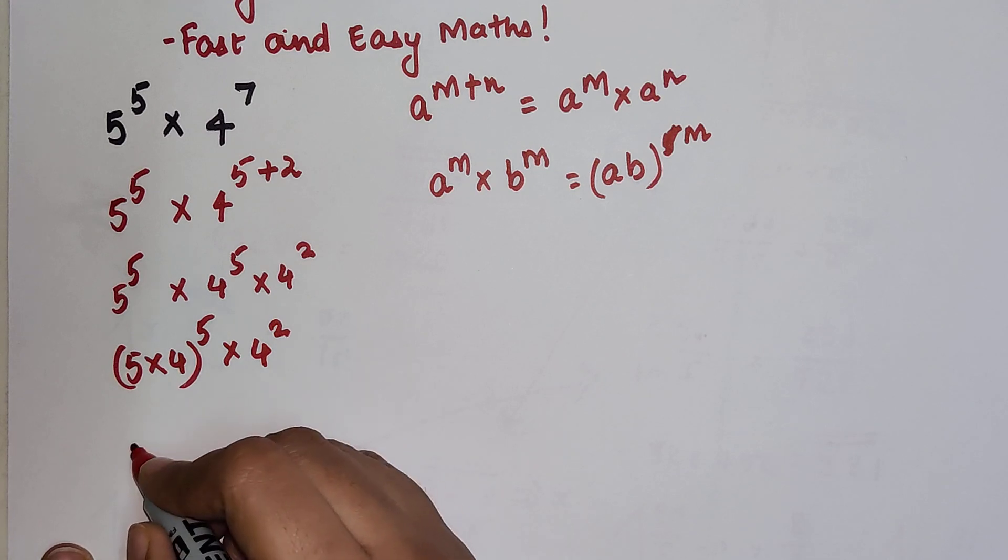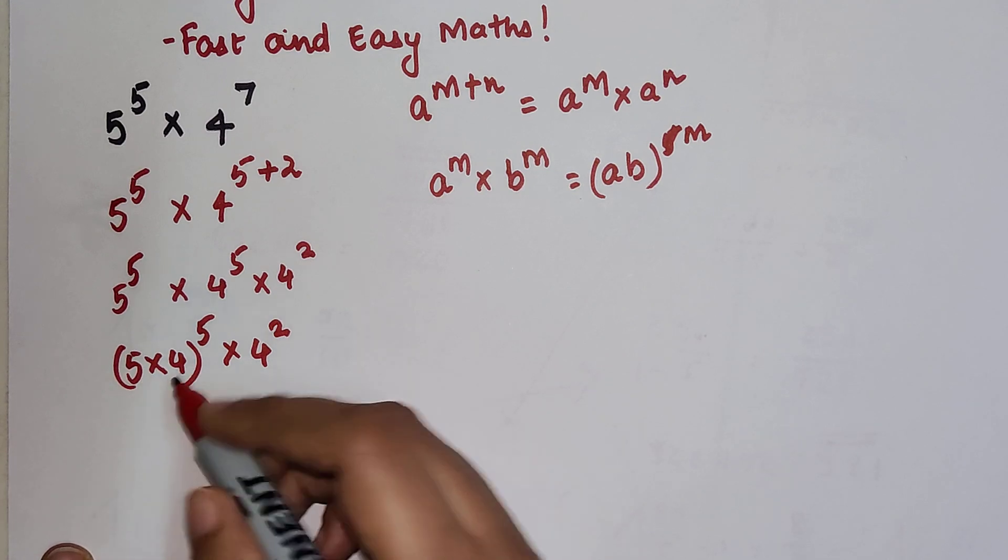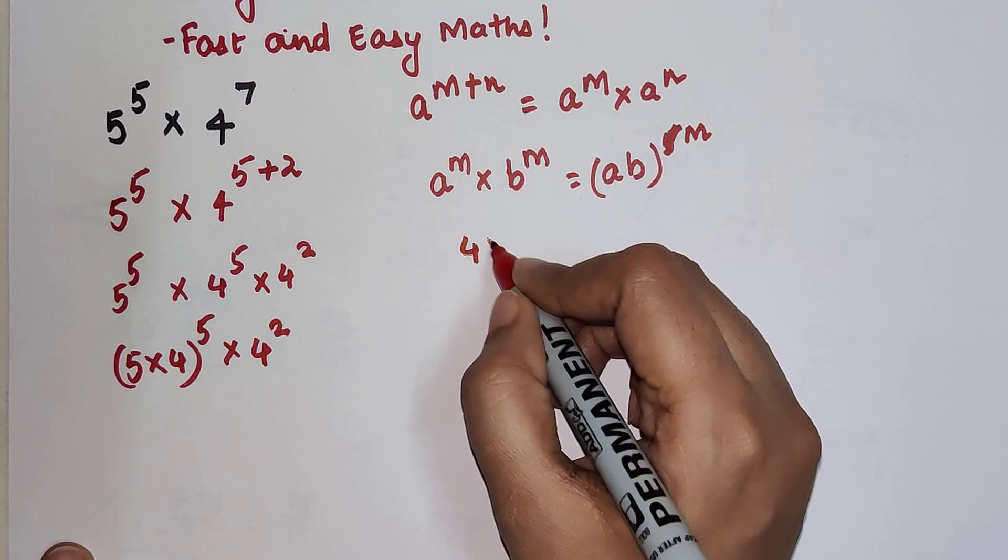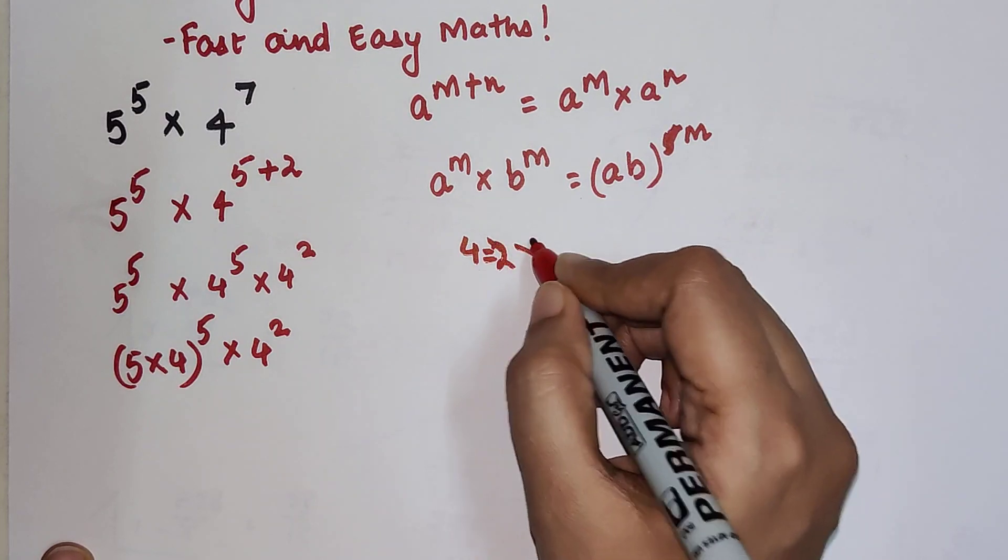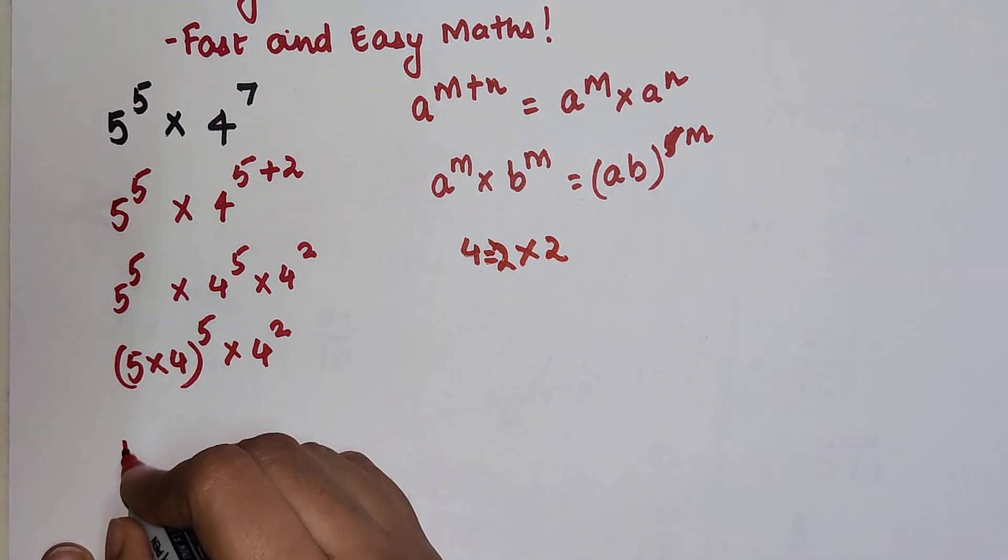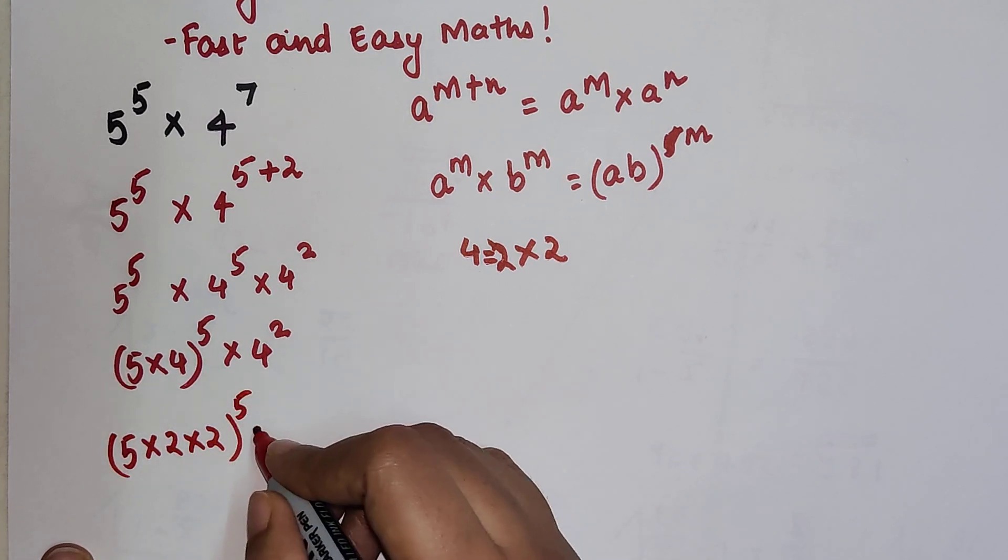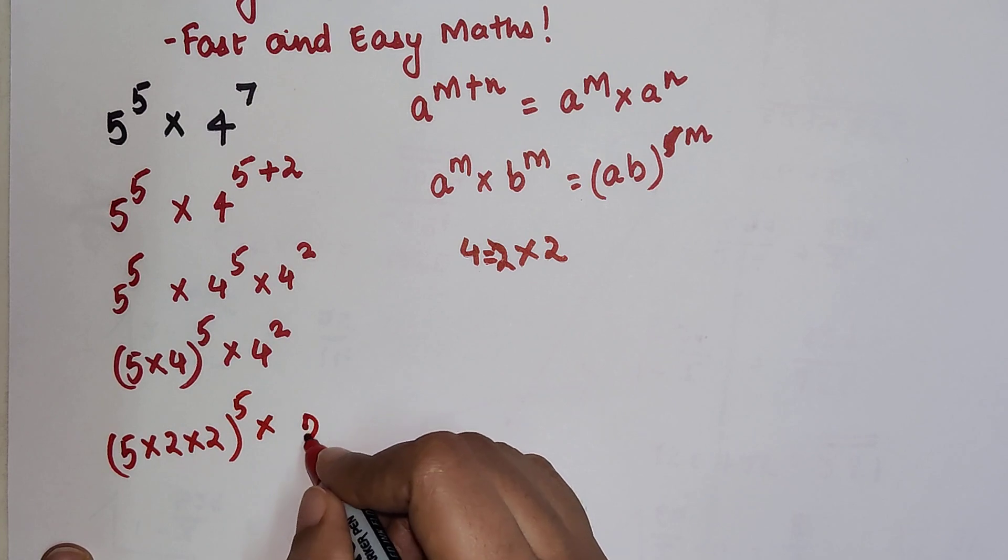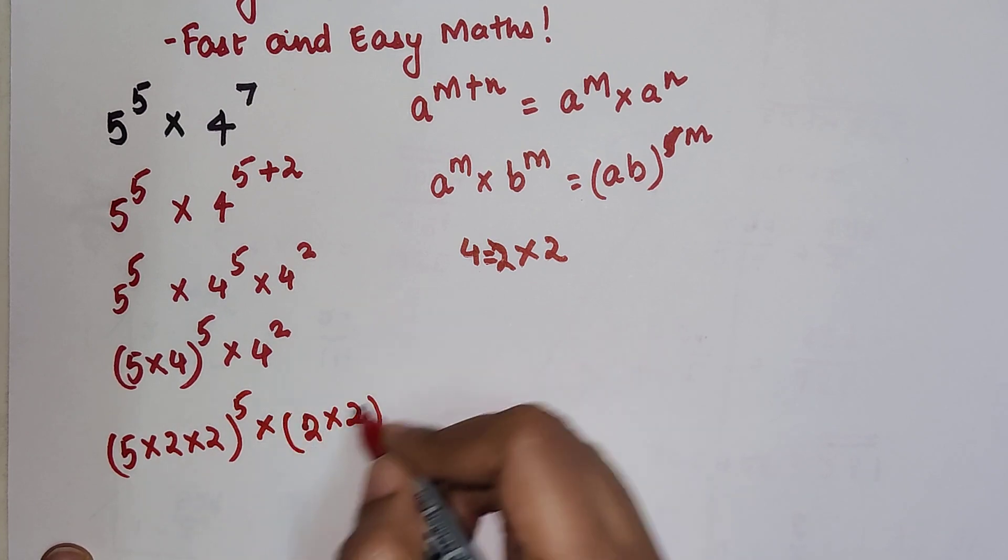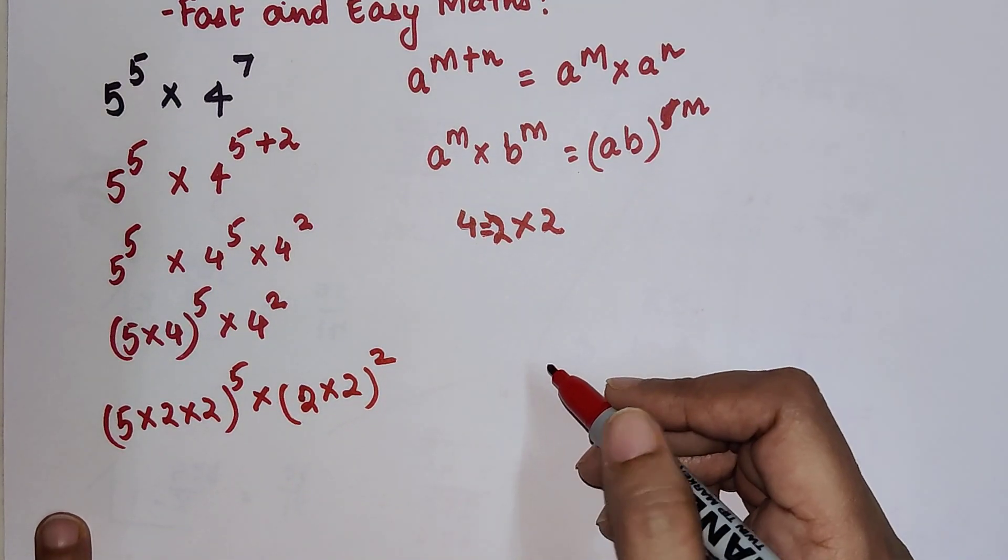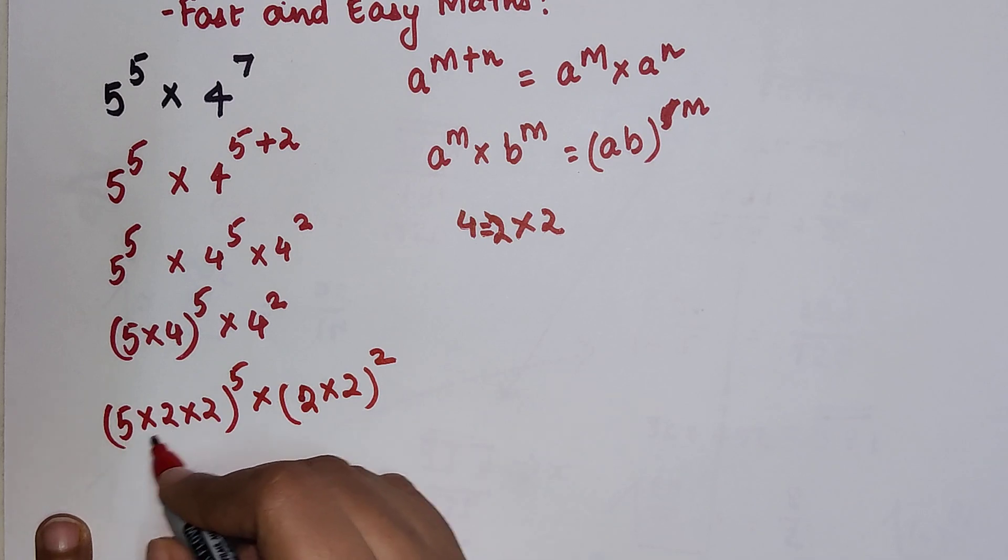So here we know that 4 can be written as 2 into 2. So this will be 5 into 2 into 2 the whole raise to 5. This also can be written as 2 into 2 the whole raise to 2.